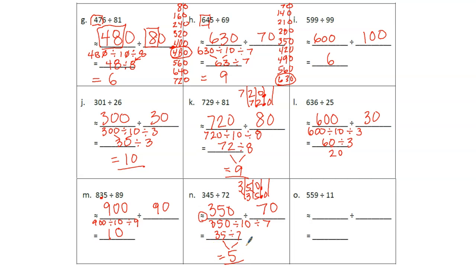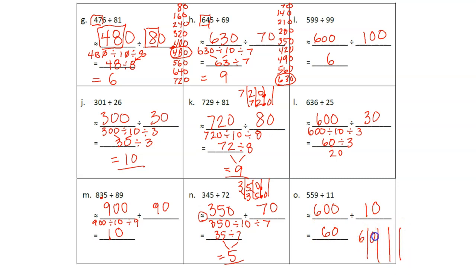Last one: 11 rounds down to 10, and 559 we're going to round up to 600. 600 divided by 10 is going to be 60 — on the place value chart, 600 divided by 10 moves everything over one place value unit. That's it, boys and girls. Hope this helps. Remember, tomorrow we have our exit ticket — make sure you're prepared. I would do this work on your own and then use this as a tool to check your work. You cannot be truly successful on these tasks if you're not practicing the right way. All right, happy learning!